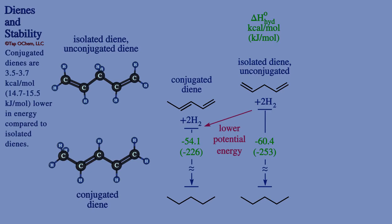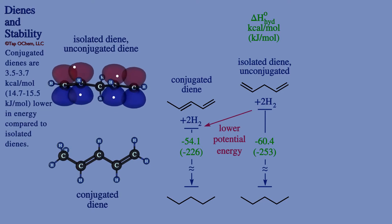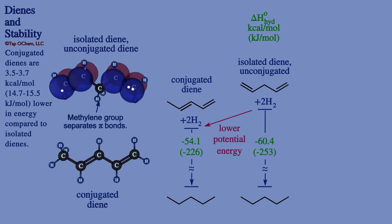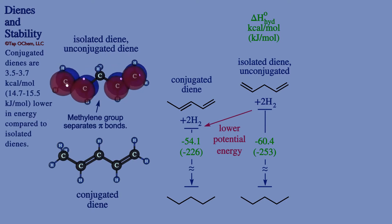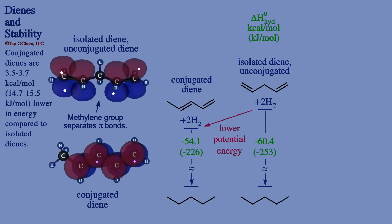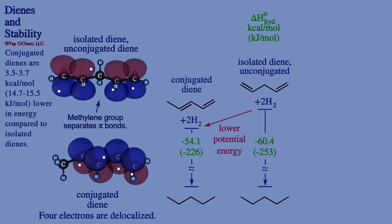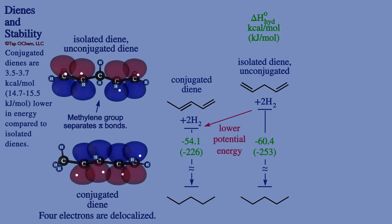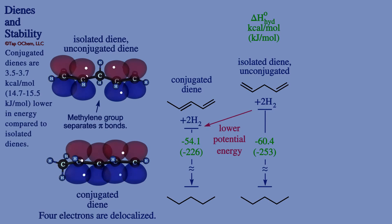Let's place p orbitals of the pi bonds, along with the electrons of each pi bond of the isolated diene. Here we see that the orbitals of pi electrons do not interact with each other because of the methylene group separating the two pi bonds. Now let's place p orbitals and the electrons that comprise the pi bonds of the conjugated diene. The conjugated diene's four electrons can delocalize throughout the array of four 2p orbitals that make up the pi bonds. Delocalizing all four electrons through two pi bonds lowers the energy of the system, and this is responsible for the lower energy of conjugated dienes.